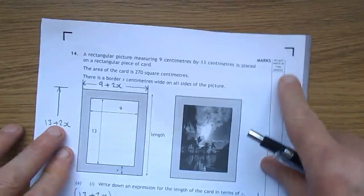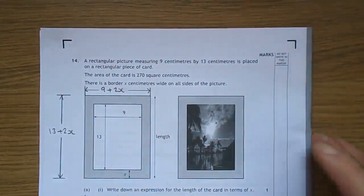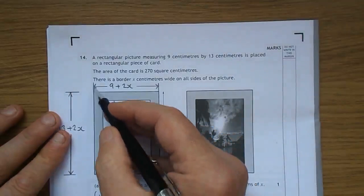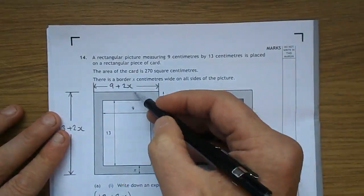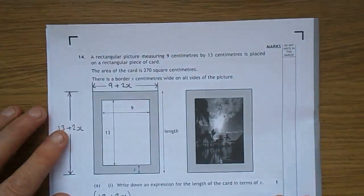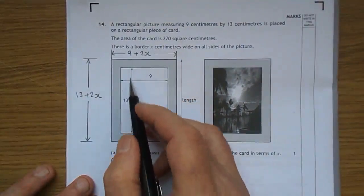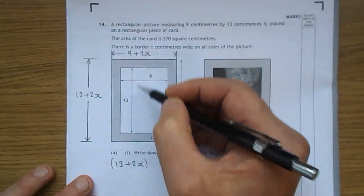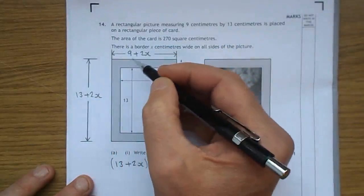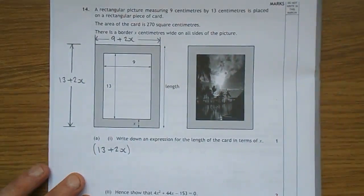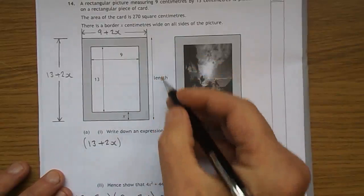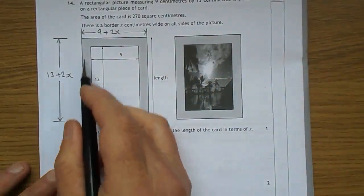And let's move on to question 14. A rectangular picture measuring 9cm by 13 is placed on a rectangular piece of card. And we have it there. And you have X top and bottom. X there, X there, and we have X all the way around. Now, you can see a few scribbles I've got there. If that's 9, and that's an X, and that's an X, then that's 9 add 2X. Looking at the vertical component, if that's 13 add X, add X, that's 13 add 2X. Question A is, here we go. Write down the expression for length of the card in terms of X. Now, the length they tell you is the up and down bit. So, it's 13 add 2X.